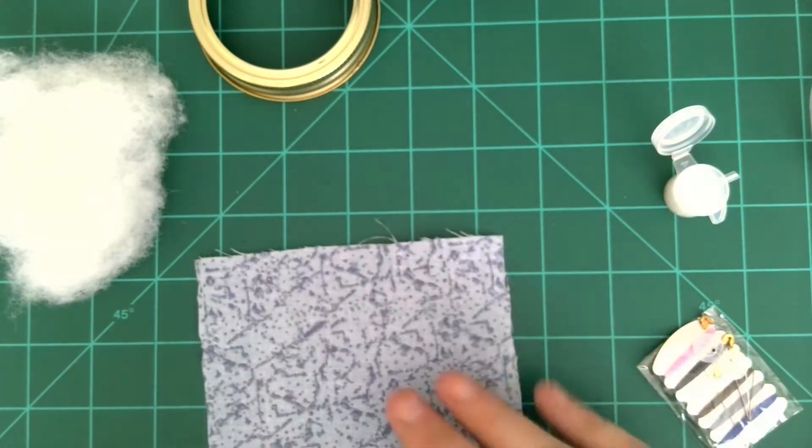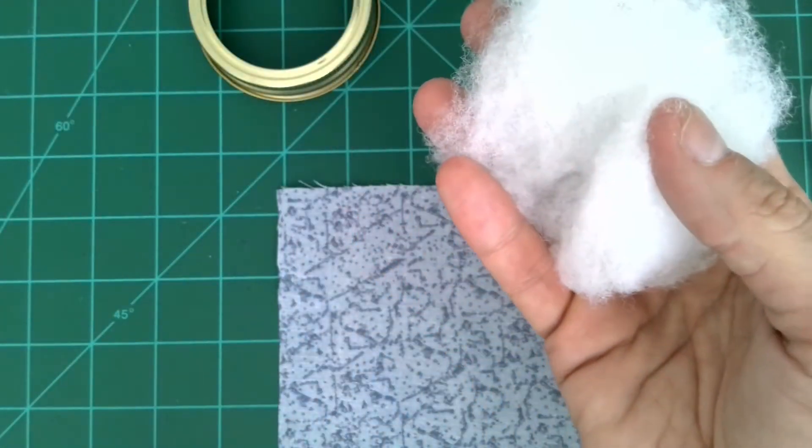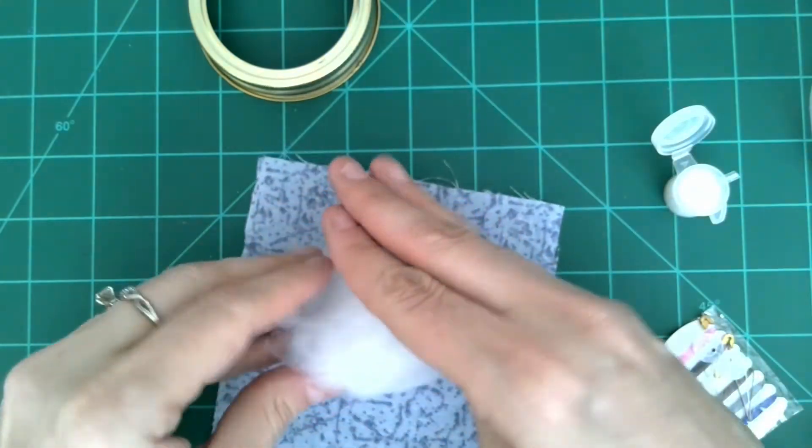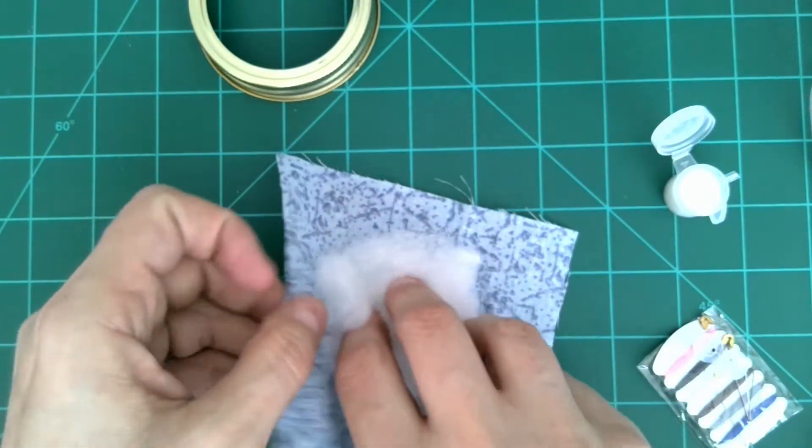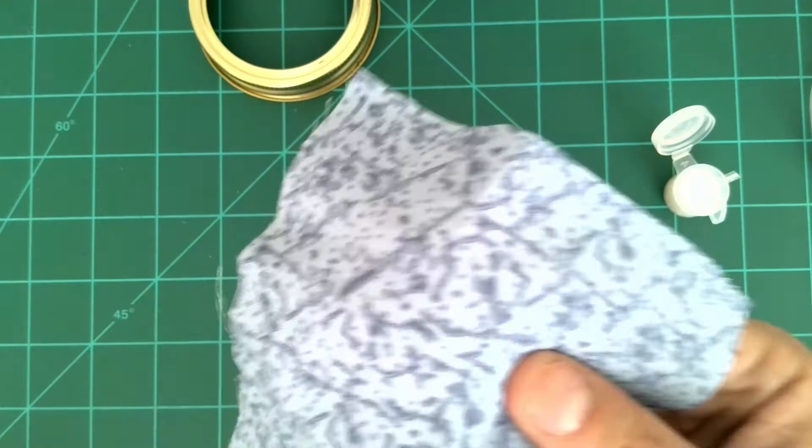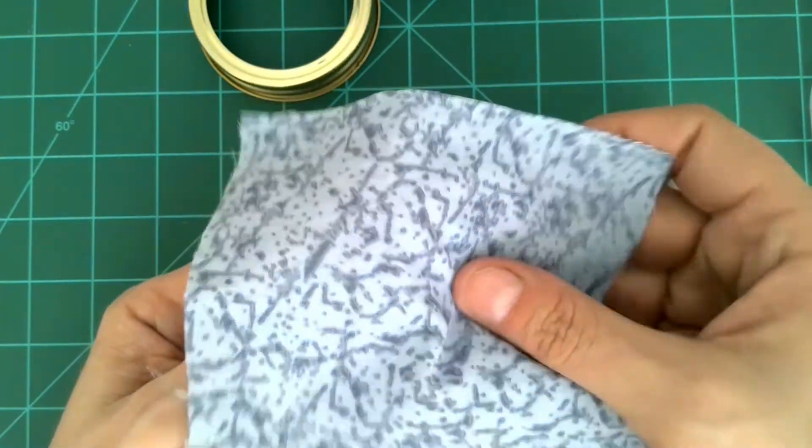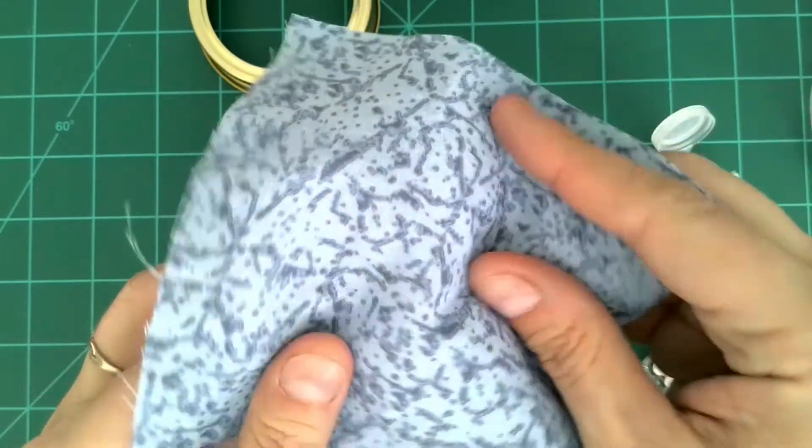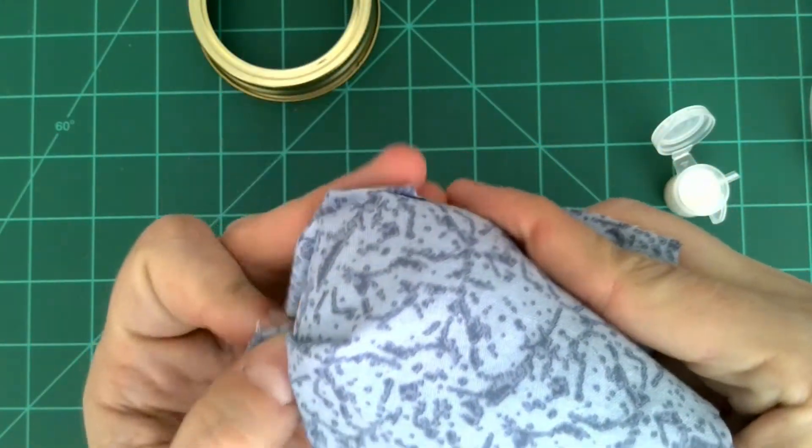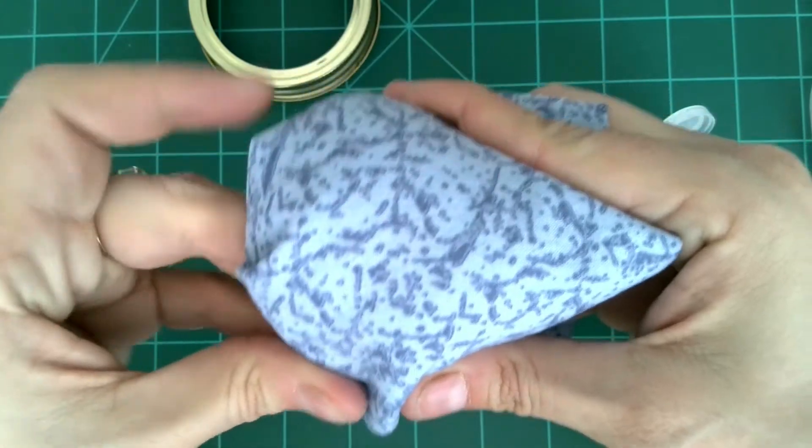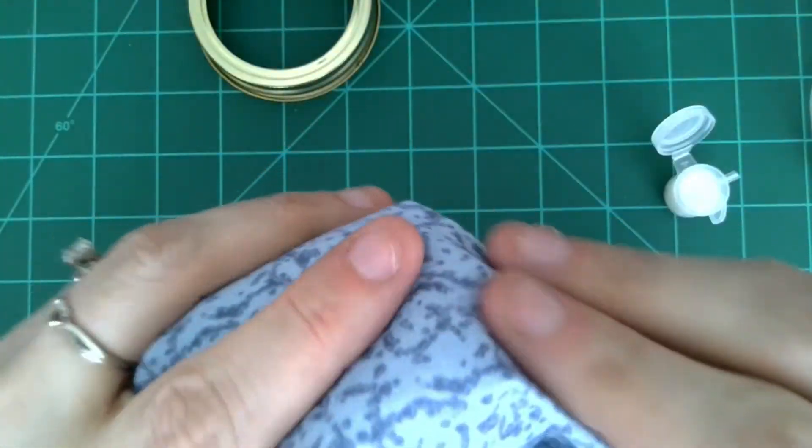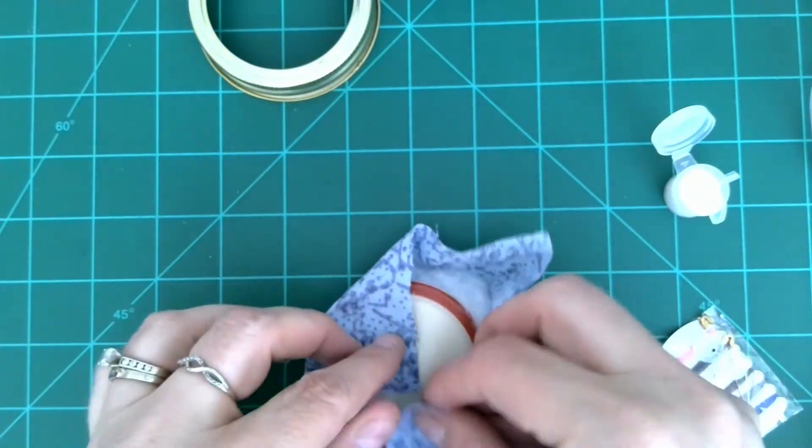I'm going to flip my fabric over and grab my polyfill, and I'm going to wrap my polyfill into my fabric like this. Then I'm going to place it on top of my jar lid and wrap my fabric around it and flip it around.